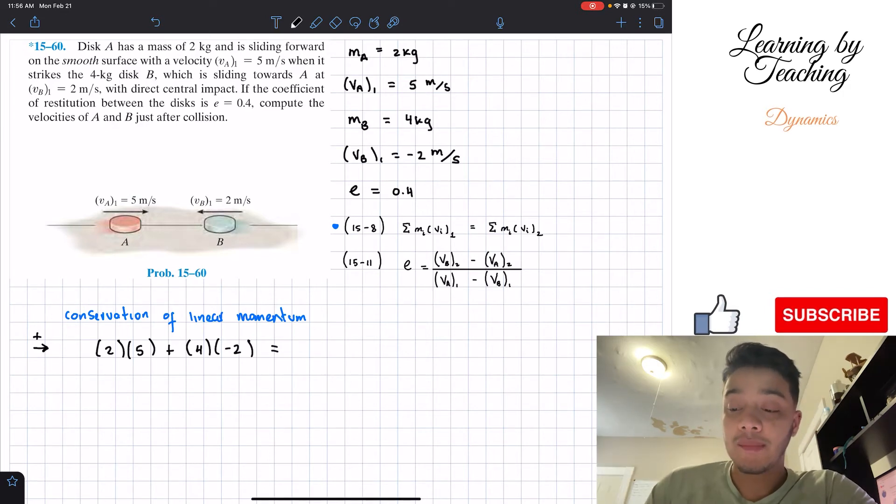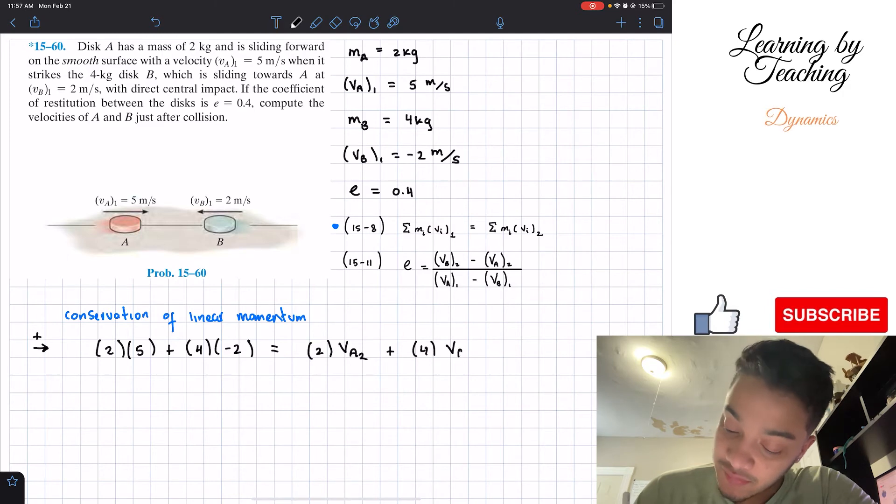And this has to be equal to the summation of all the masses times all its velocity at our final state or our second state. So for our second state, we're looking after the collision. The masses don't change. So the mass of A is still 2. The velocity of A, we don't know it. That's what we're trying to find. Plus the mass of B, multiplied by the velocity of B in its second state.